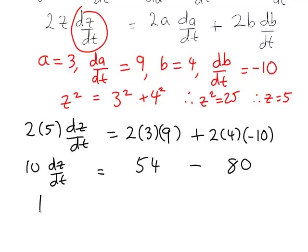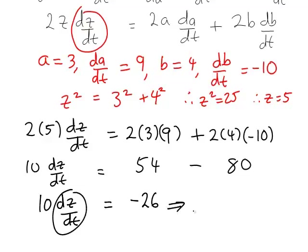That is 10 times dZ/dT is going to be equal to negative 26. So the final step now that we've substituted everything in is to solve for the unknown rate, which you can now see is pretty simple here. We just want dZ/dT. So we can simply divide both sides by 10 to get dZ/dT equals negative 26 divided by 10, which is just negative 2.6.